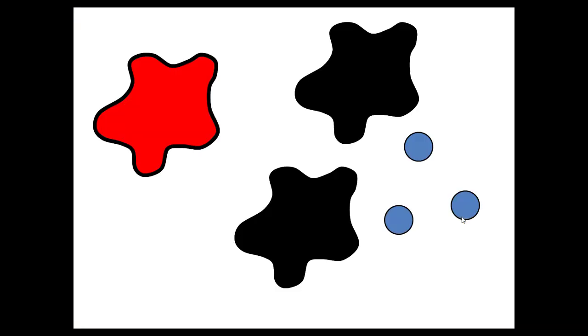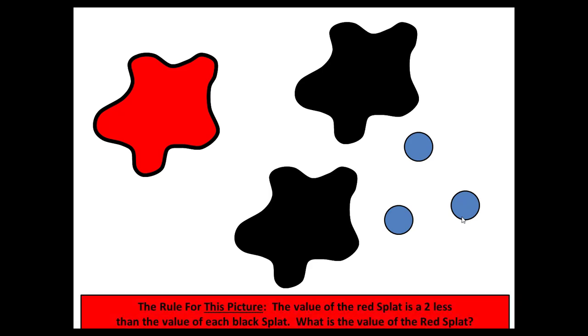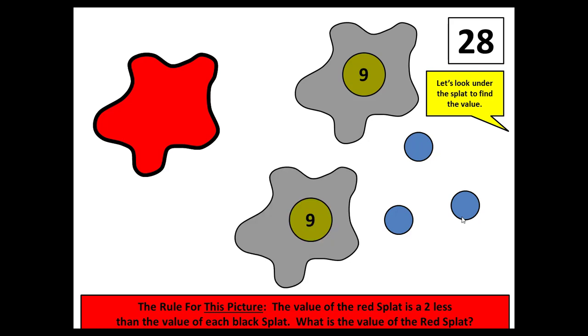Then as you click, the splats and dots appear. And remember, the rule is different on every slide. In this case, the value of the red splat is two less than the value of each black splat. The routine is exactly the same. When you click, it will show the total, the three text boxes, and then it will reveal the value of the black splats. And finally, the value of the red splat.